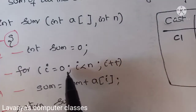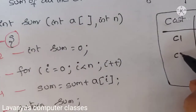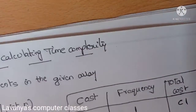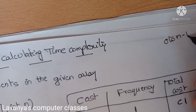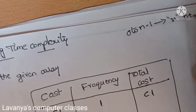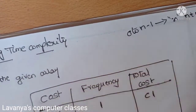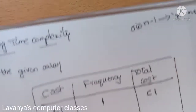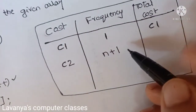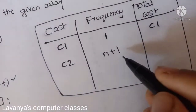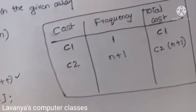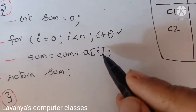Next is the for loop: for i = 0, i < n, i++. The cost is an unknown constant c2. The loop runs from 0 to n−1, which is n times, but the condition is also checked one extra time when it becomes false to exit the loop. So the frequency is n+1, and the total cost for the loop statement is c2 × (n+1).